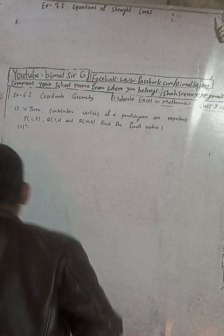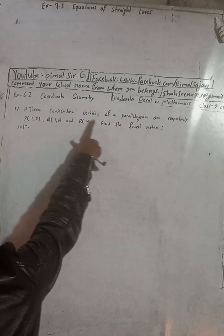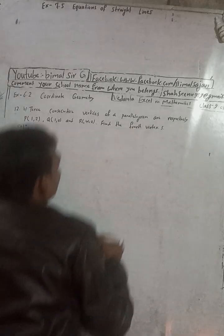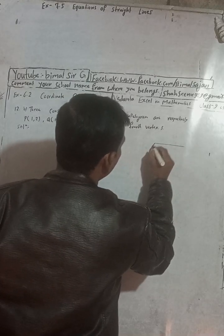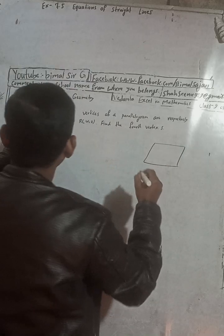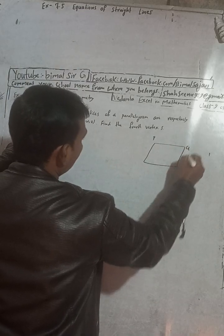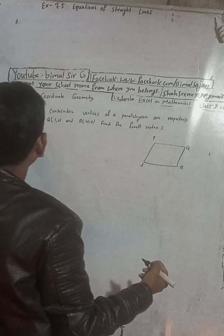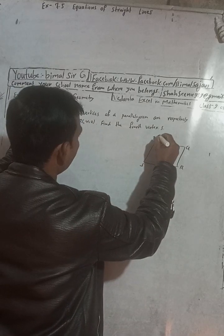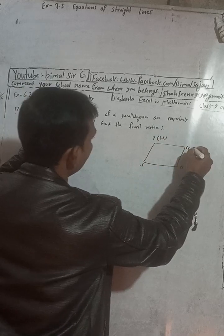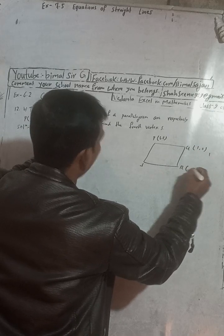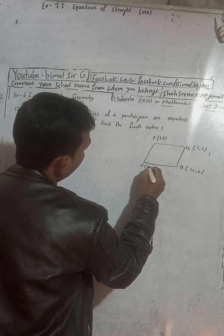This is the demand of one of my YouTube subscribers. Here, three consecutive vertices of a parallelogram are respectively P, Q, R, and S. We need to find the fourth vertex. I will first make a parallelogram — P, Q, R. The coordinates are: P is (1, 2), Q is (1, 0), and R is (4, 0). We have to find the fourth vertex, which I will suppose is (x, y).